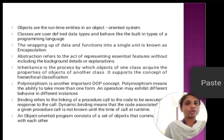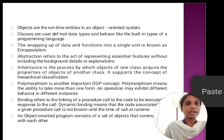And next concept, we are going to see about data abstraction. Abstraction refers to the act of representing essential features without including the background details or explanation. This is called data abstraction. Next, we are going to see about data inheritance. Data inheritance is the process by which objects of one class acquire the properties of objects of another class. It supports the concept of hierarchical classification.